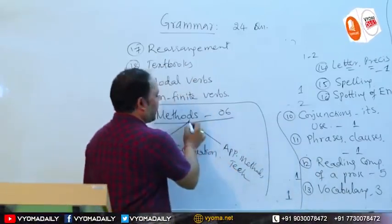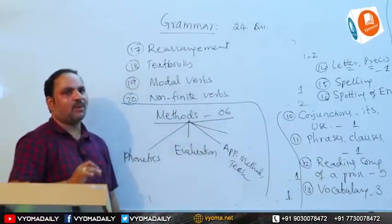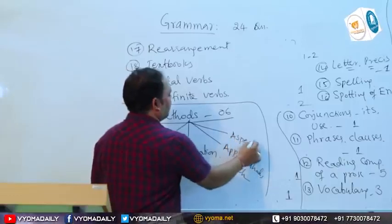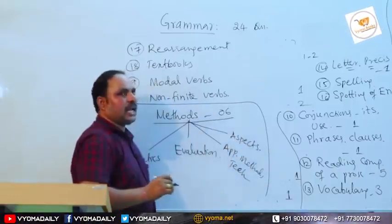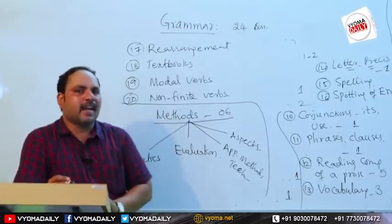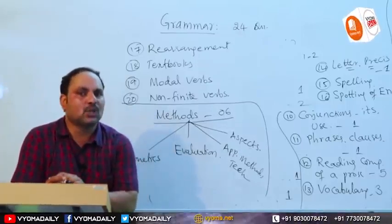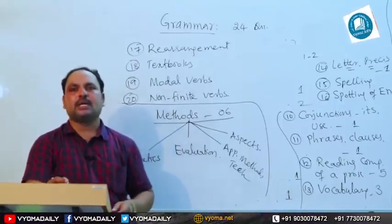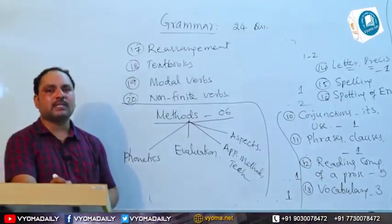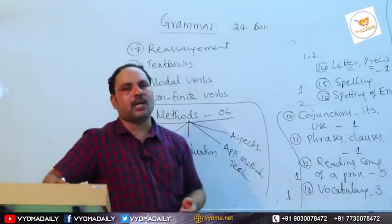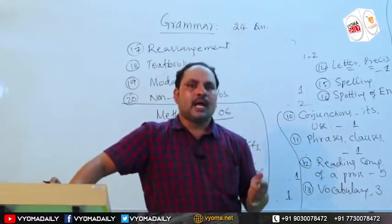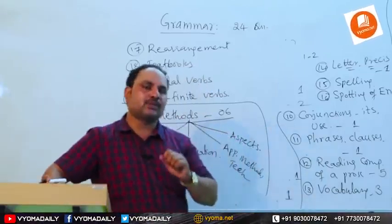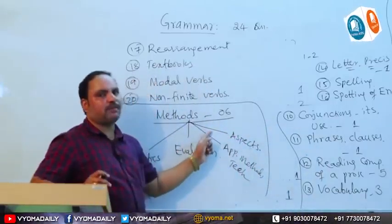The fourth key area in methodology is aspects of English language. Questions are asked on the nature and features of English language, the history of English language — including the Old English period, Middle English period, and Modern English period — and principles of language learning and teaching. One question is asked from these aspects.